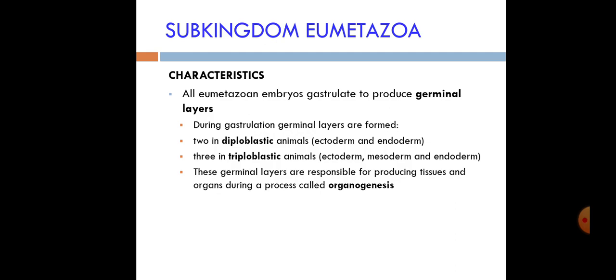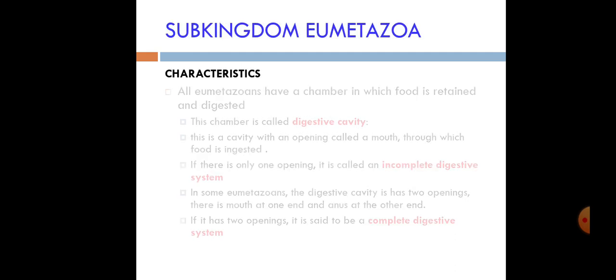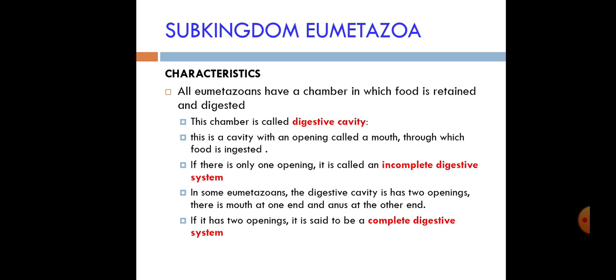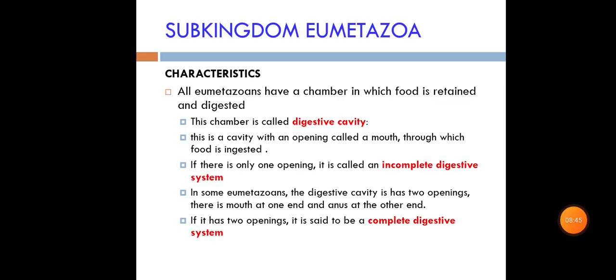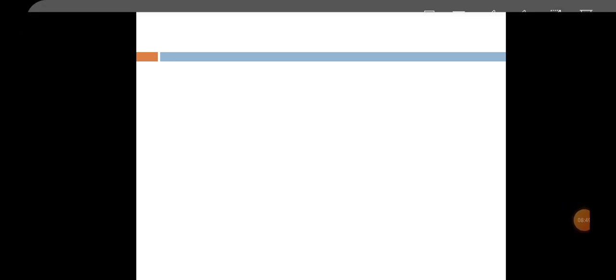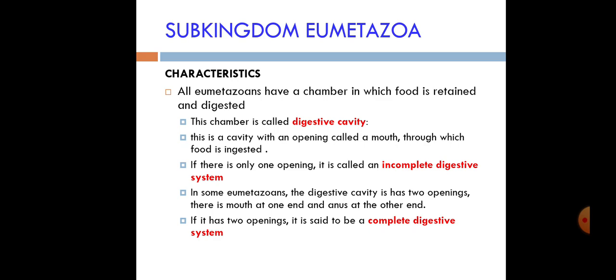After gastrulation, a gastrula is formed, and from it come layers — either two or three — which are responsible for the formation of tissues and the process of organogenesis. All Eumetazoans also have a chamber in which food is retained, called the digestive cavity. This cavity has an opening called the mouth through which food is ingested.